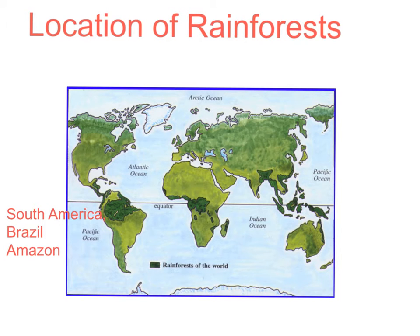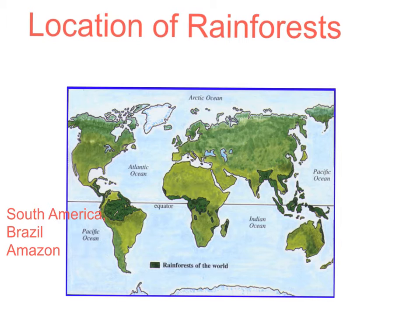Rainforests grow along the equator because it's hot, as it's closer to the sun. Brazil has the Amazon rainforest, and Central Africa has the Congo. The rainforest grows on the equator, and this happens because the hot air rises and cools to form rain.